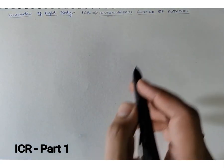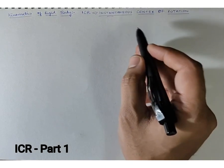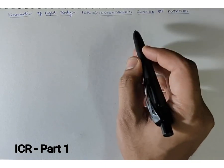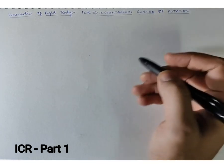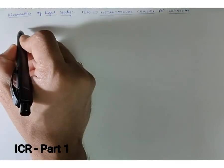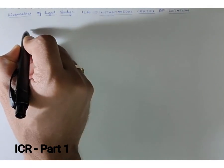In a mechanism, it's possible that for various different instances we may have different points of rotation. Let us consider an example: if we have a particular bar which is hinged at a given point.